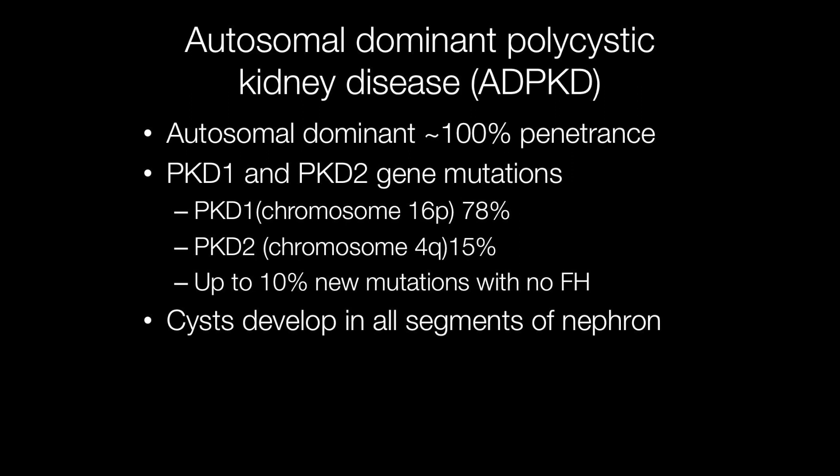Inheritance is autosomal dominant with almost complete penetrance. The most frequent gene mutation is the PKD1 mutation on chromosome 16p, accounting for around 78% of cases. Around 15% of cases are caused by the PKD2 gene mutation on chromosome 4q, but around 10% of cases of autosomal dominant polycystic kidney disease are due to new mutations with no family history.